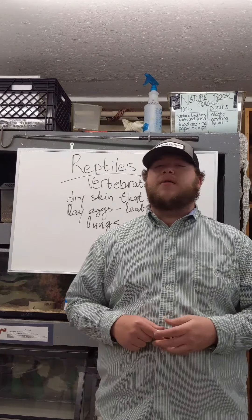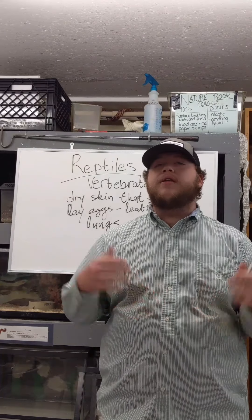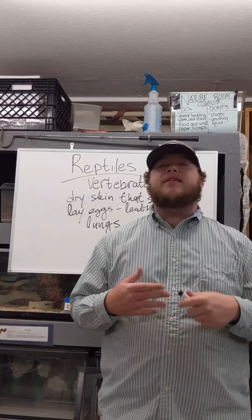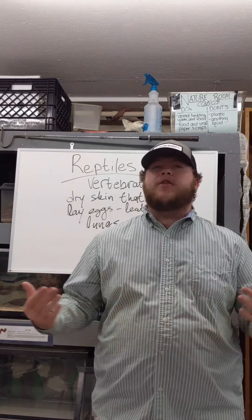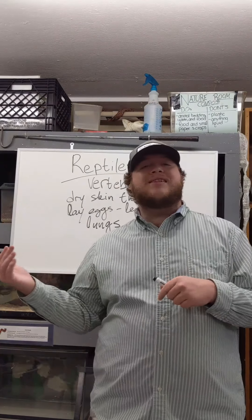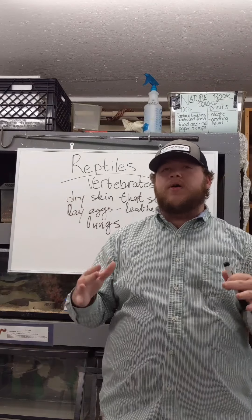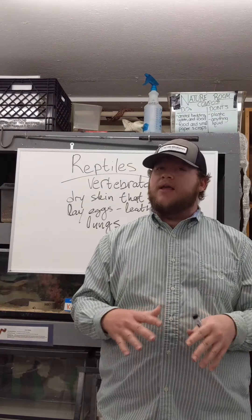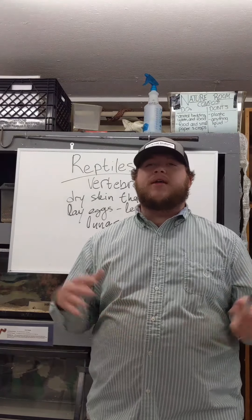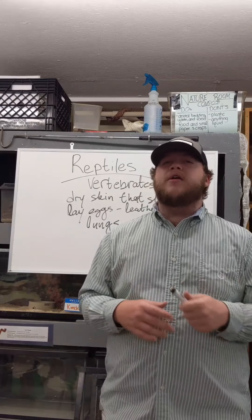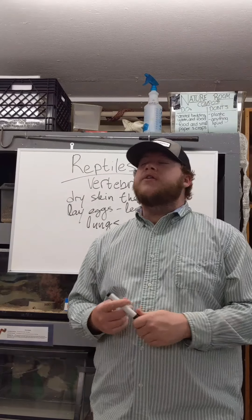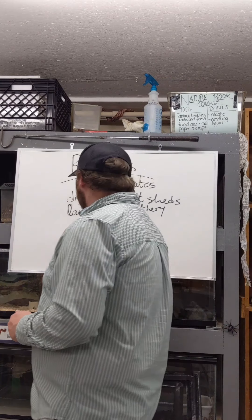The last thing to discuss is whether reptiles are warm-blooded or cold-blooded. Reptiles are cold-blooded, meaning they cannot regulate their own body temperature or create their own heat. That's why you see snakes on roads during cool evenings — the road has trapped heat from the sun during the day. On very hot days, you won't find reptiles out in the sun; you'll find them in the shade, trying to cool off. So reptiles are cold-blooded.